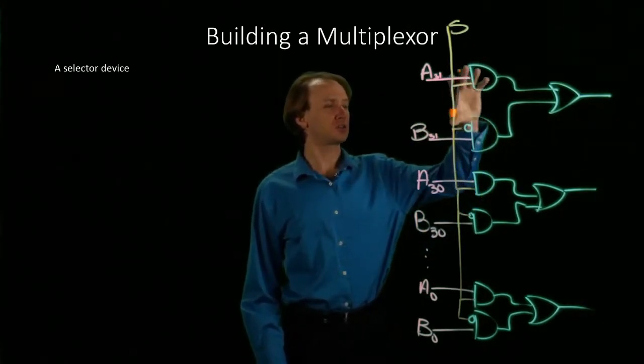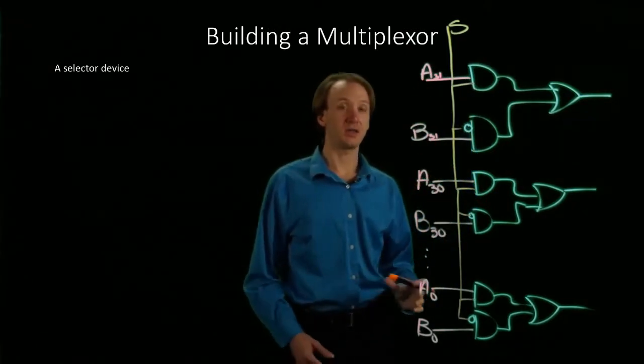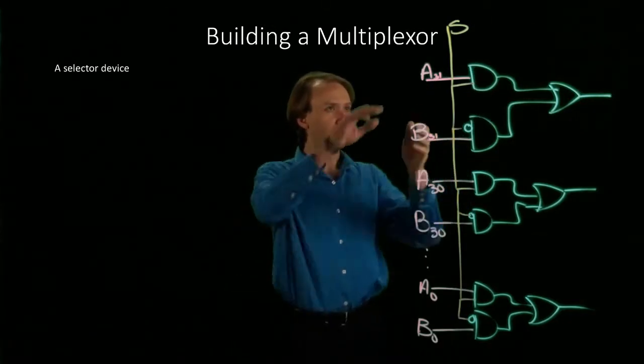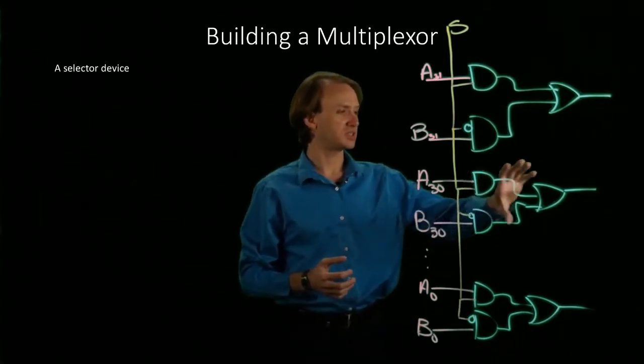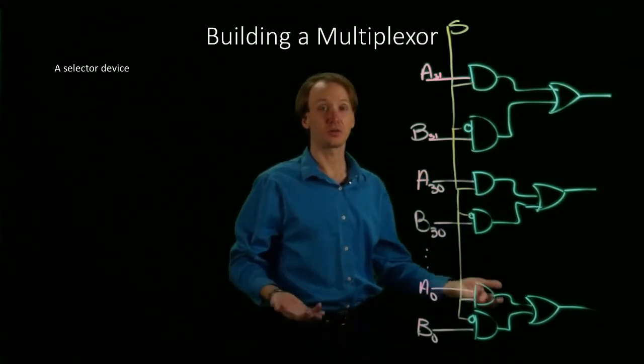So now I've got essentially a 1-bit multiplexer for each pair of bits in my inputs. In each case, I'm either going to select all of the values of A or all of the values of B. I'm doing that using the same structure that I had for one bit. It's just been copied out another 31 times.